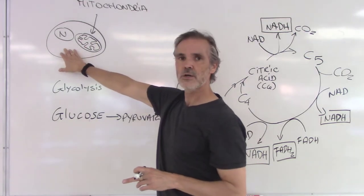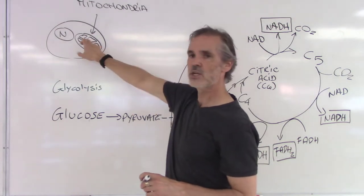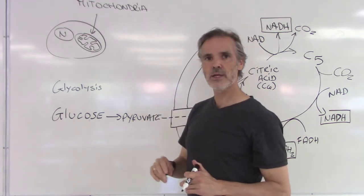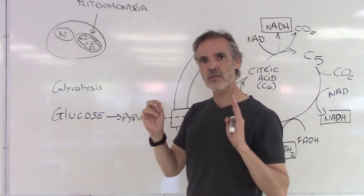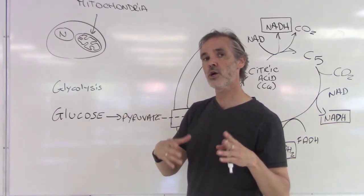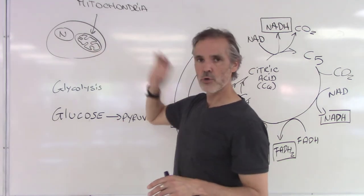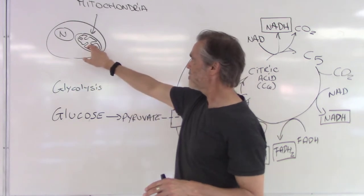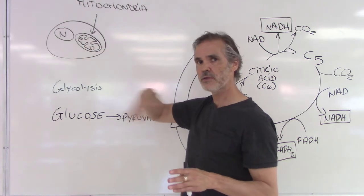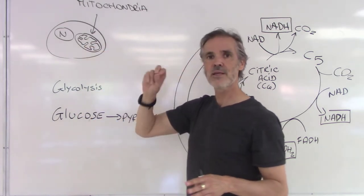What we have here inside the cell is called a cytoplasm. What we have inside the mitochondria is called a matrix. What we're going to look at right now is the citric acid cycle, also known as the Krebs cycle, or the tricarboxylic cycle — there are different names for it, but they always mean the same thing. What we're going to look at takes place inside the mitochondria, which is the powerhouse of our cell. This is where the energy is being created, and it takes place inside the matrix.